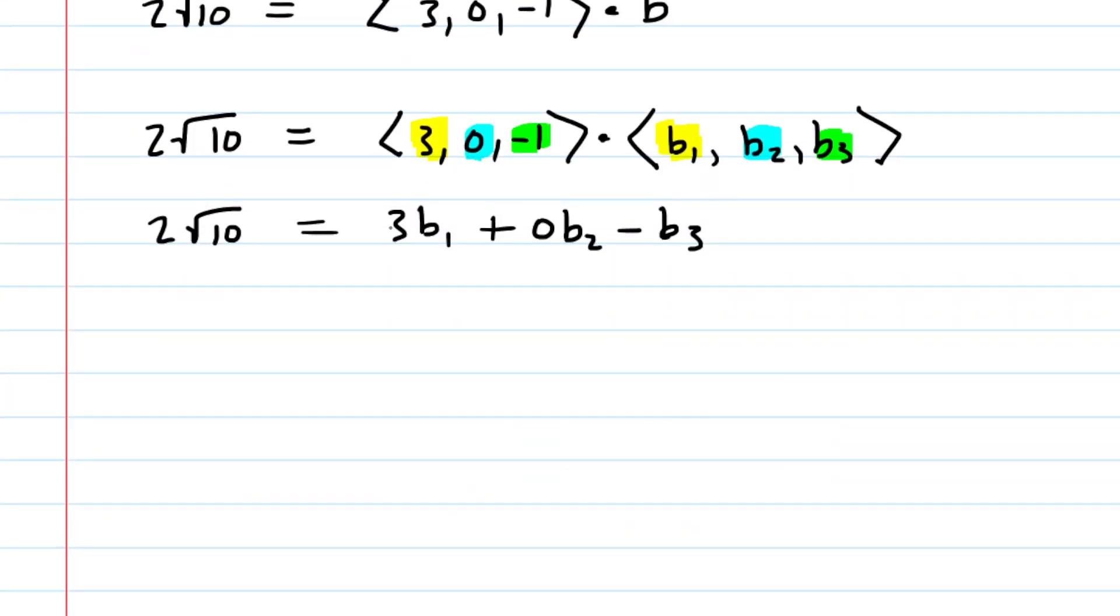This is very good, and we want any vector. So what we could do, for simplicity, is we could let B1 equal 0. So what happens when we do that? We have 2 square root of 10 equals 3 times 0, plus, and we might also wish, for again simplicity, to let B2 also equal 0. So then over here, we would have 0 times 0, and then we have minus B3.